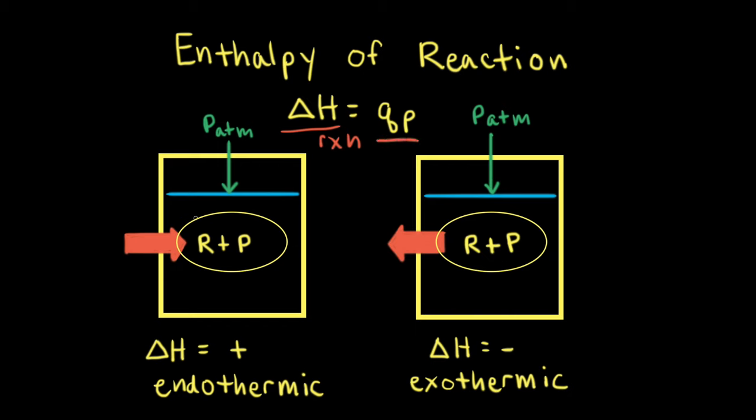Let's say we are performing a chemical reaction in aqueous solution under constant atmospheric pressure. The reactants and products of that chemical reaction make up the system, and everything else makes up the surroundings.